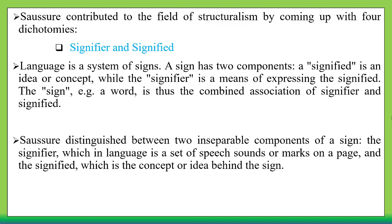The first dichotomy is signifier and signified. This means that language is a system of signs. A sign has two components. The signified is an idea or concept, while the signifier is the means of expressing the signified. A word, for example, is the combined association of a signifier and a signified.